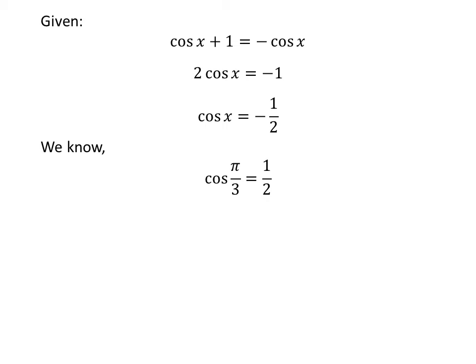As the cosine function is a periodic function with a period of 2 times pi, let us first find the solutions to the equation cosine of x is equal to minus half in the period of 0 to 2 times pi.